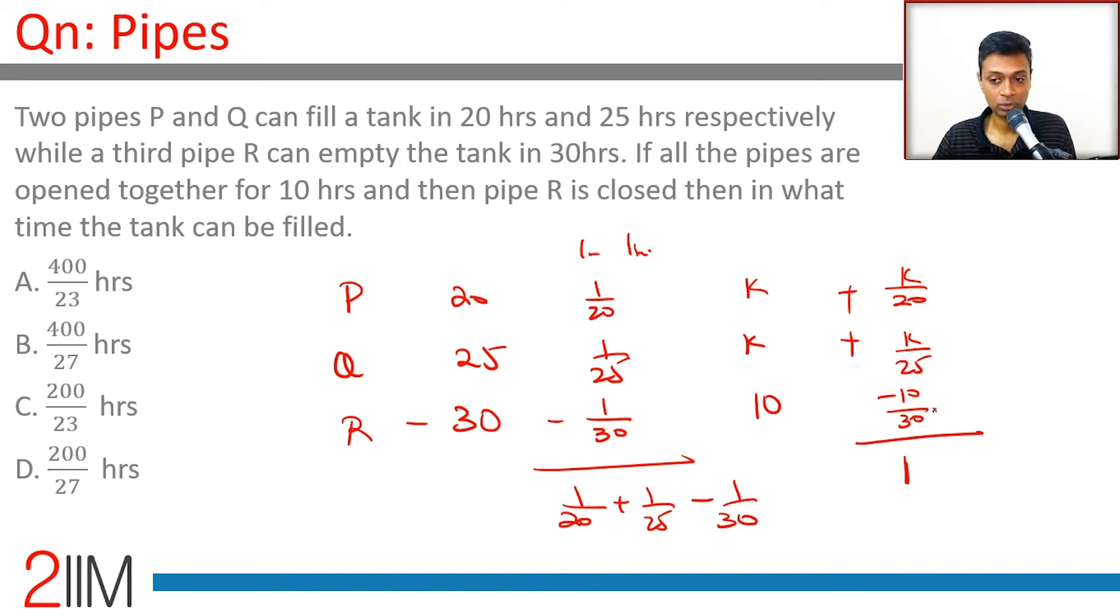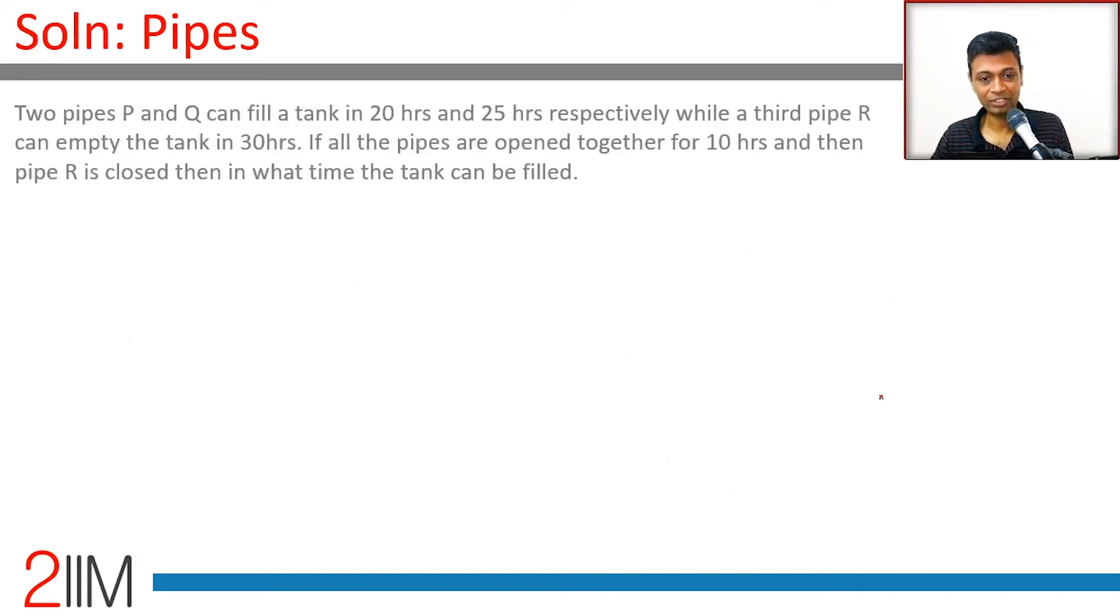10/30 is 1/3. We're effectively saying K/20 plus K/25 minus 1/3 equals 1. The LCM of 20 and 25 is 100, so 5K/100 plus 4K/100 minus 1/3 equals 1.